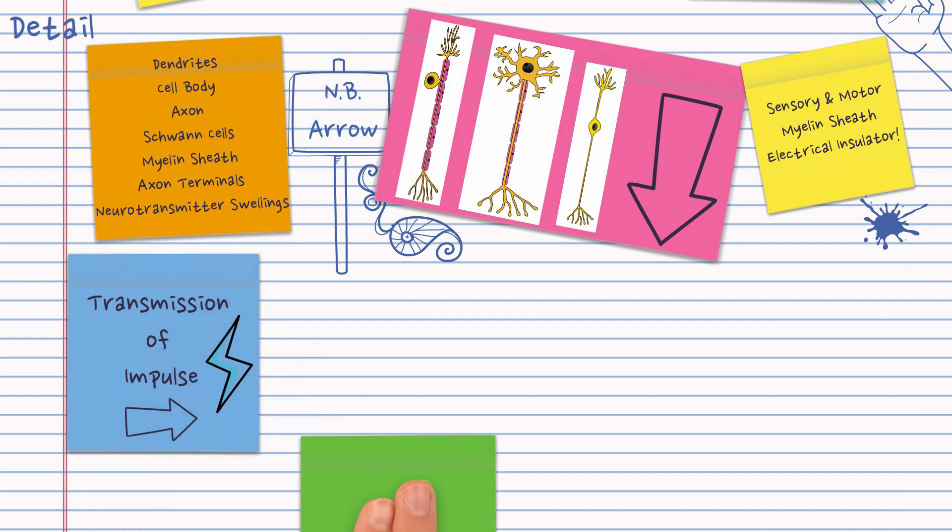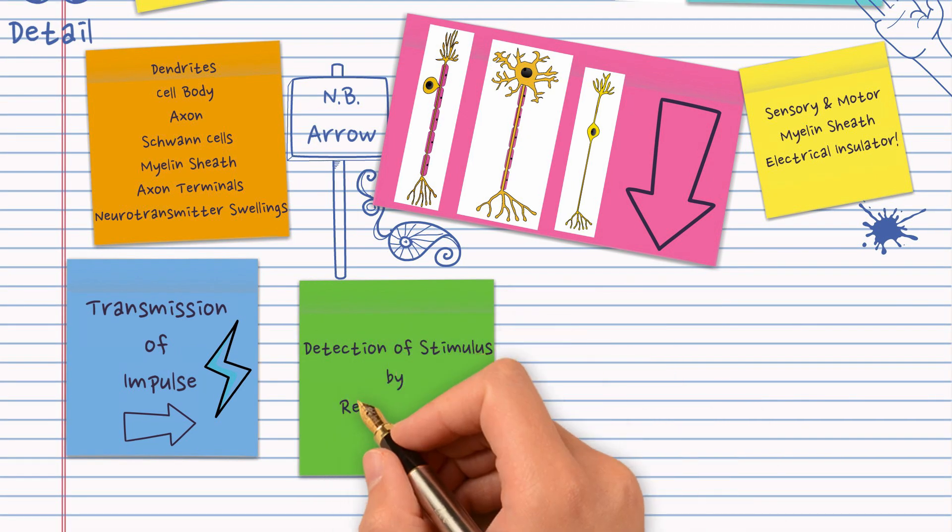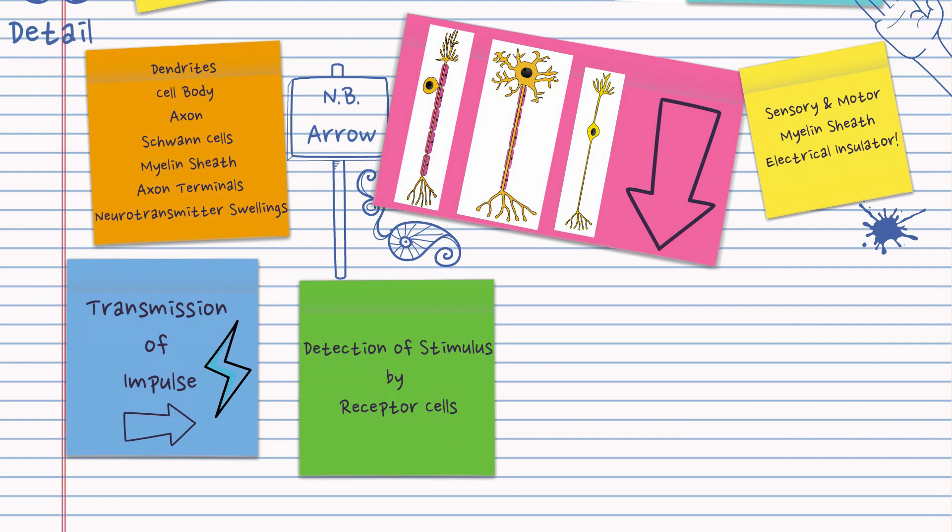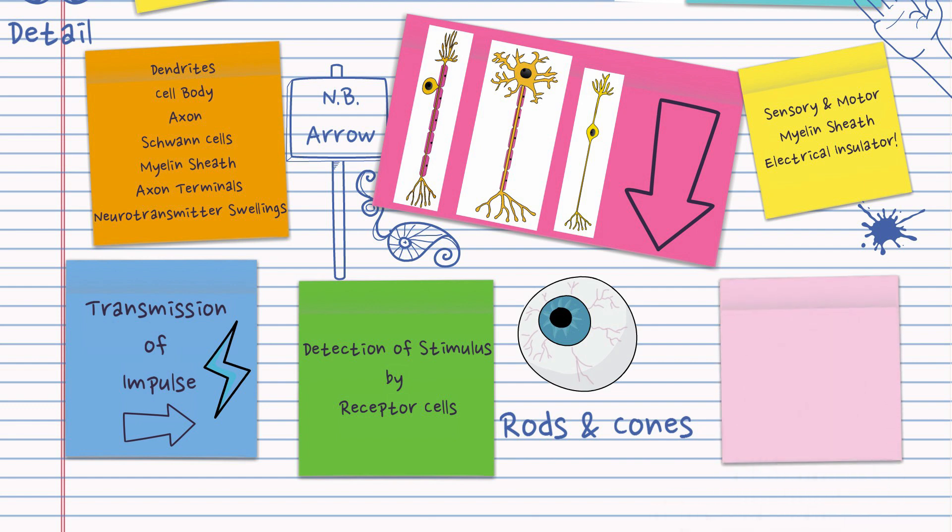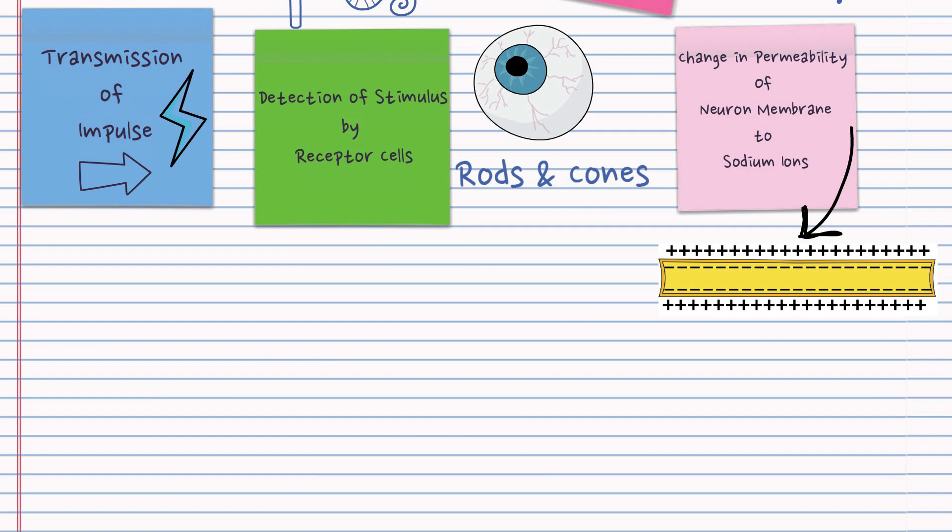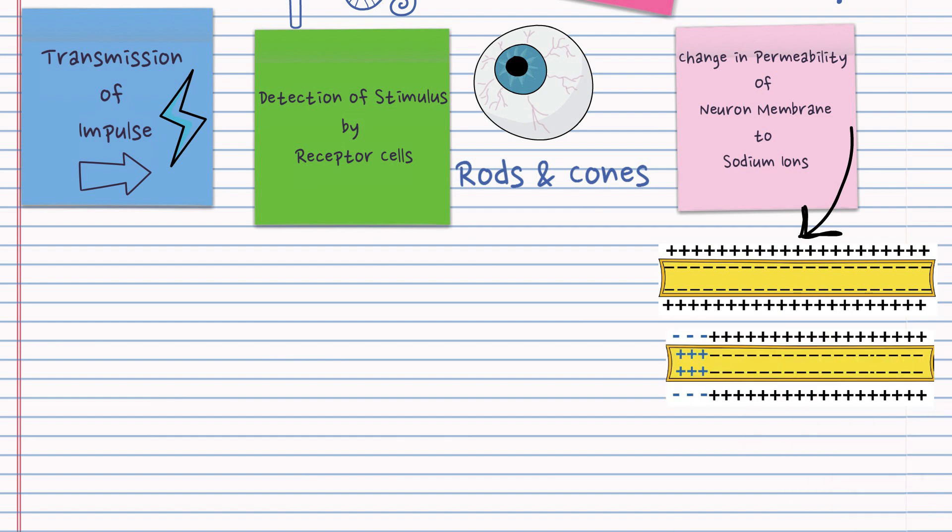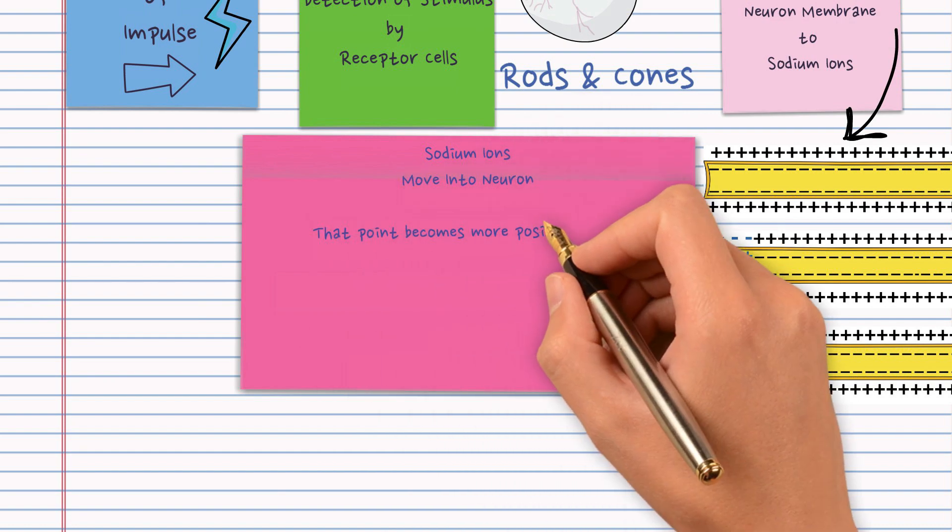When a stimulus of a certain strength is detected by specialized cells known as receptor cells, this results in the generation of an impulse. We have specialized receptor cells in our eye like the rods and cones. The detection of the stimulus causes a change in the permeability of the neuron membrane to certain ions, sodium ions in particular. They move in making that point more positive on the inside and negative on the outside.